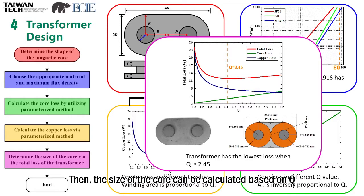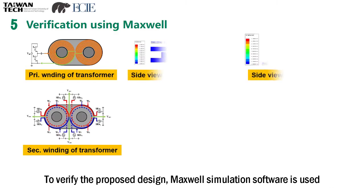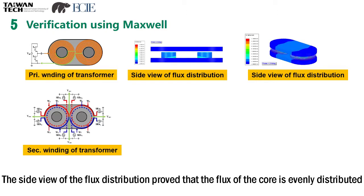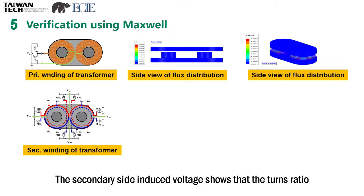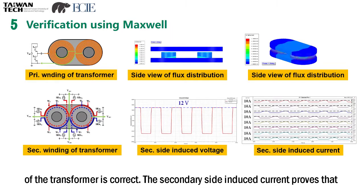Then the size of the core can be calculated based on Q. The figure shown here is the simplified model of the primary side winding and secondary side winding. To verify the proposed design, Maxwell simulation software is used. The side view of the flux distribution proves that the flux of the core is evenly distributed, and the secondary side induced voltage shows that the turns ratio of the transformer is correct.